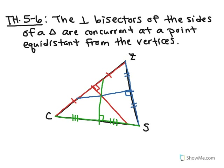Let's see the rest of this theorem. It says the perpendicular bisectors of the sides of a triangle are concurrent at a point — that means where they intersect, which I'll highlight in black — that is equidistant from the vertices. We have three vertices: C, Z, and S. What's really cool about perpendicular bisectors of a triangle is that this point of concurrency is the same distance to Z as it is to S as it is to C. That's what that theorem says.